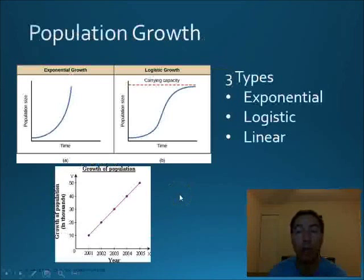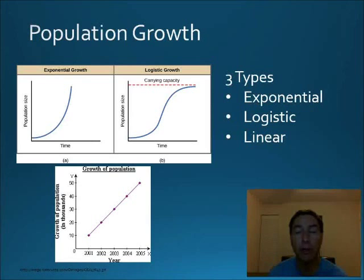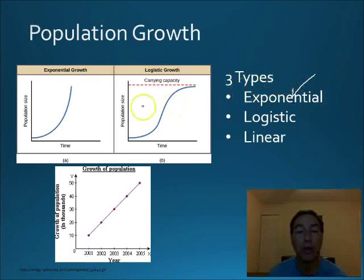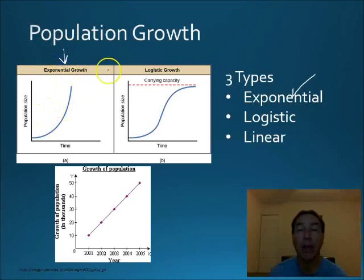When we talk about populations, we have to talk about population growth. We've talked about population growth with humans, but species are very similar. There are three types of growth. First, we have exponential growth, which is growth that is unchecked. You get this J-shaped curve, which shows that the population is increasing at a certain percentage rate all the time.